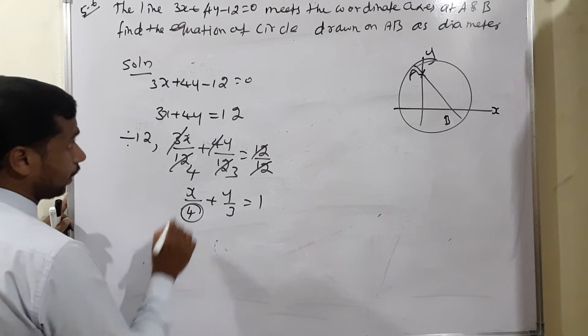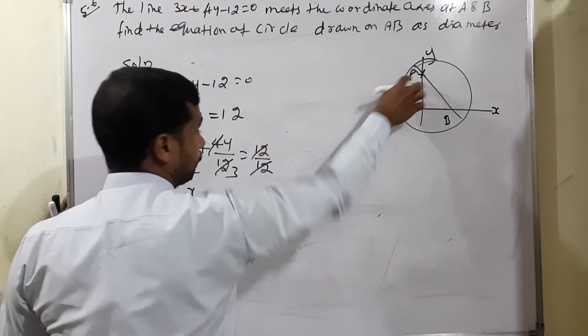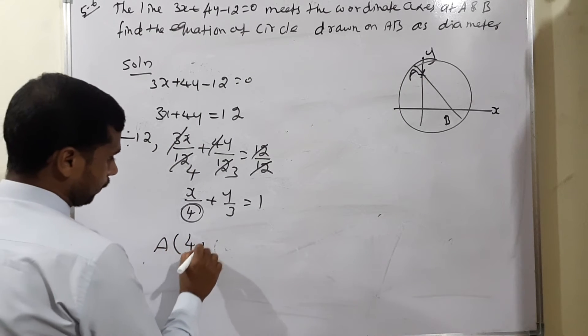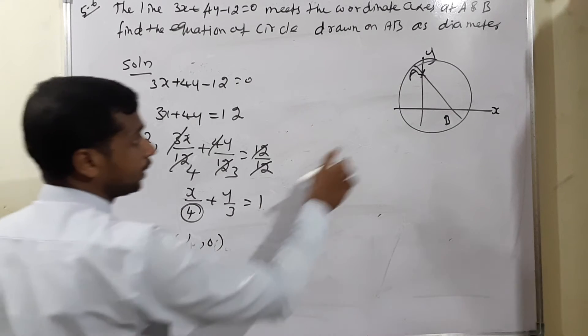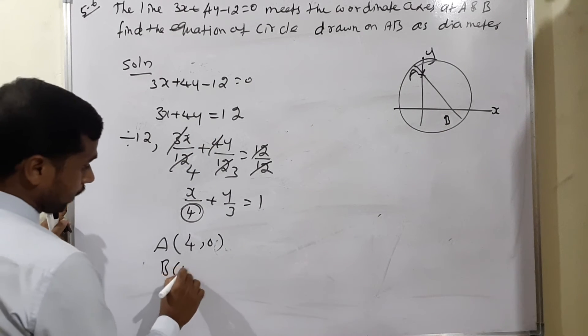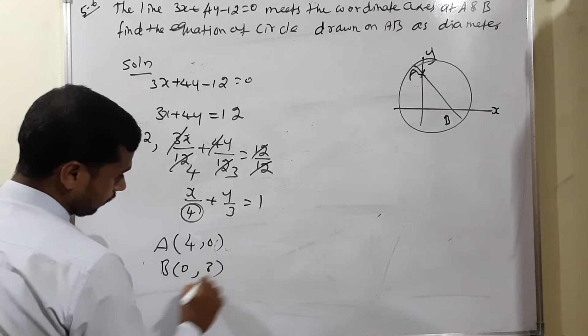This is considered for capital A, the first point is 4 comma 0. Then point B, that is meeting the y axis, means x will be 0 and y will be 3.